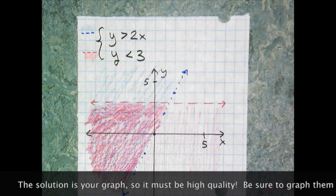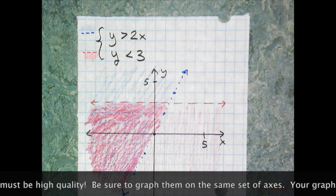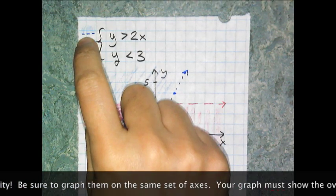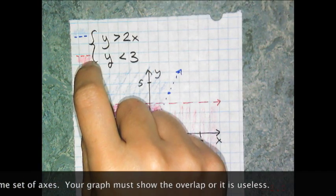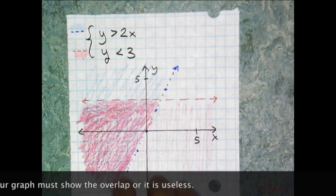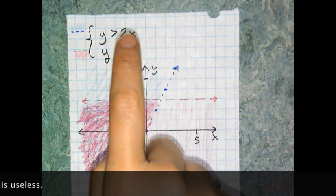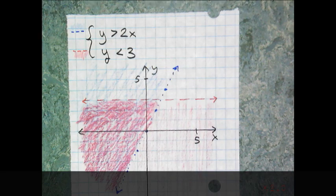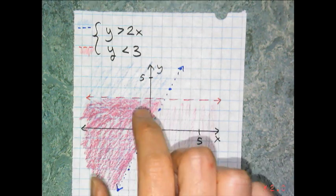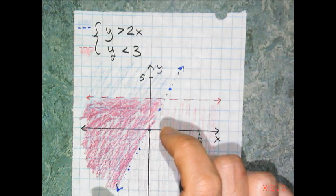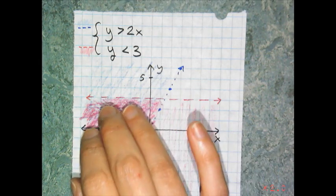I color code my graphs to make it obvious what I'm graphing and I suggest you do the same. So the first line is dotted shade above, the second line is dotted shade below. And so where you see blue is the bottom inequality and where they overlap I shaded in super dark and I used purple because red and blue make purple. So the whole point of this exercise is to figure out where they overlap.